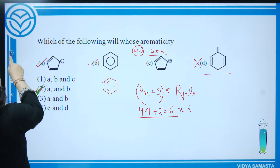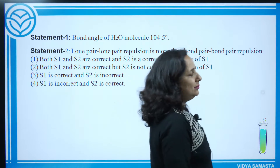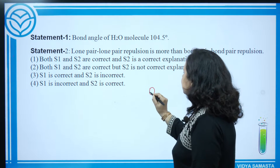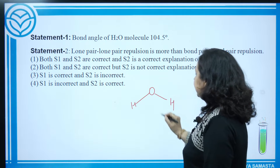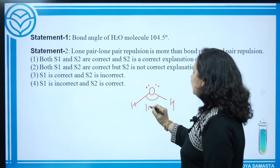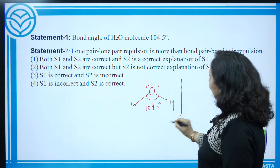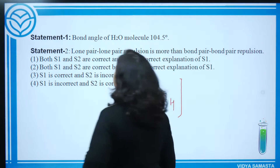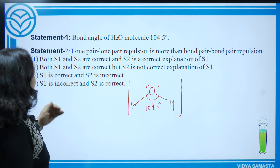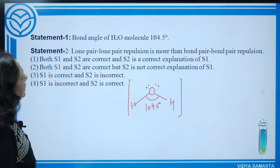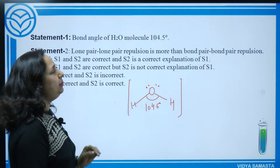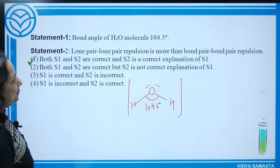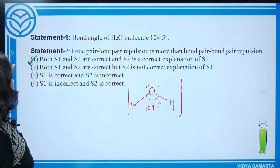Next question from chemical bonding: bond angle of water molecule. Very basic — water has a bond angle of 104.5°. Lone pair–bond pair repulsions are greater than bond pair–bond pair repulsions, so the bond angle decreases from the ideal tetrahedral angle. Both the statement and explanation are correct.